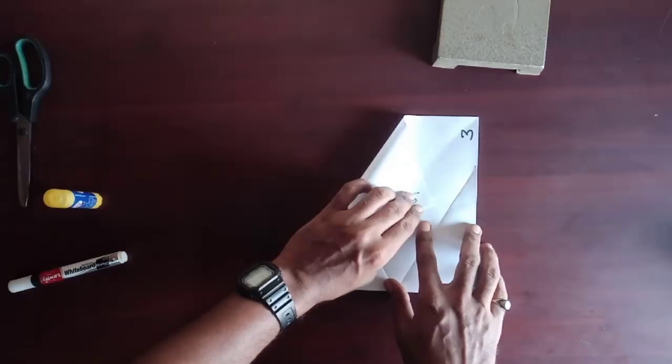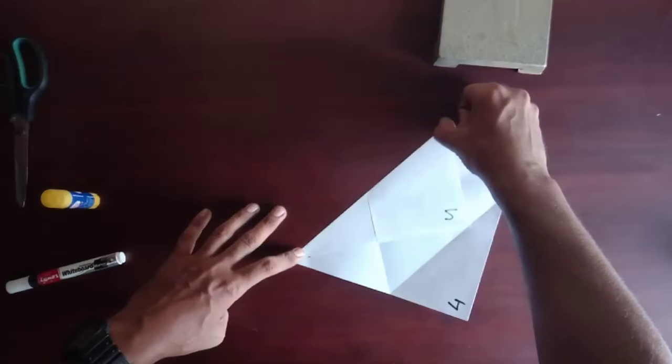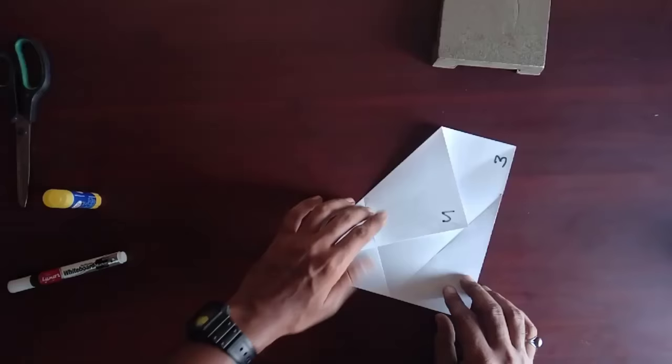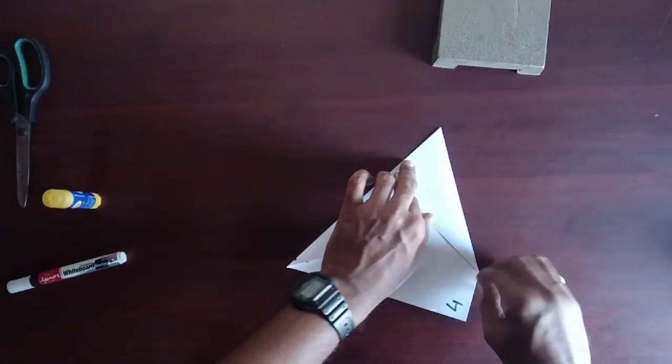Now similarly, bring corner 2 over the midline and make a fold up to corner 1. Fold corner 3 over this fold and again you will get a 60 degree angle.